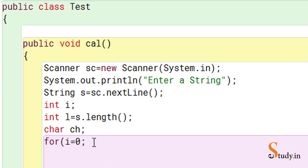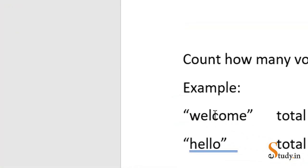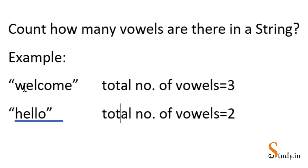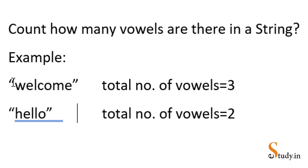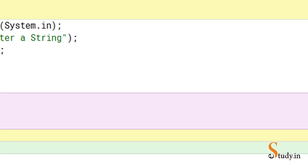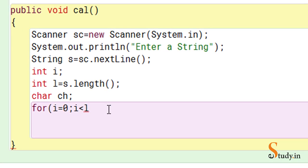We write i < l, not i <= l. Here's why: the length of 'welcome' is seven — that's one, two, three, four, five, six, seven. But the index starts from zero: 0, 1, 2, 3, 4, 5, 6 — so the last character 'e' is at index six, while the length is seven. So index always starts from zero, but length counting starts from one. That is why we write i < l.